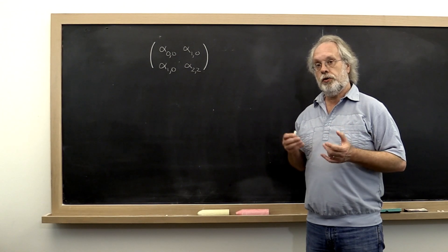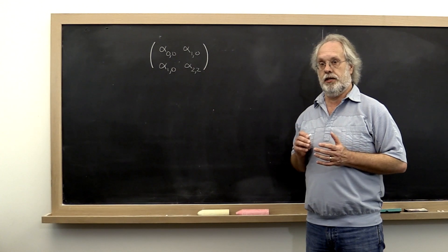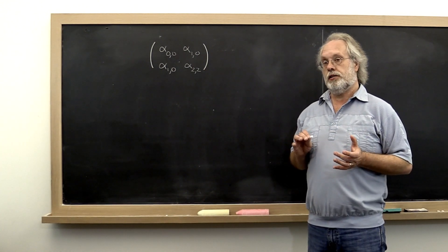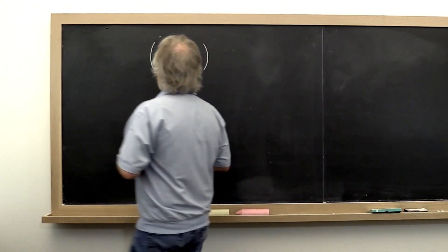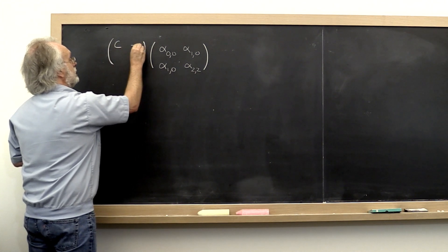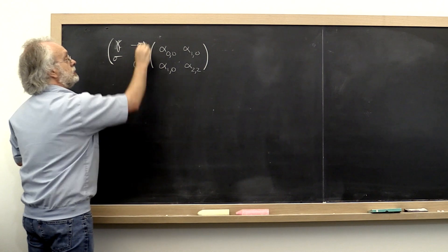Jacobi's method also uses rotations, but it uses them a little bit differently. It turns out that you can find a rotation gamma minus sigma sigma gamma transpose,